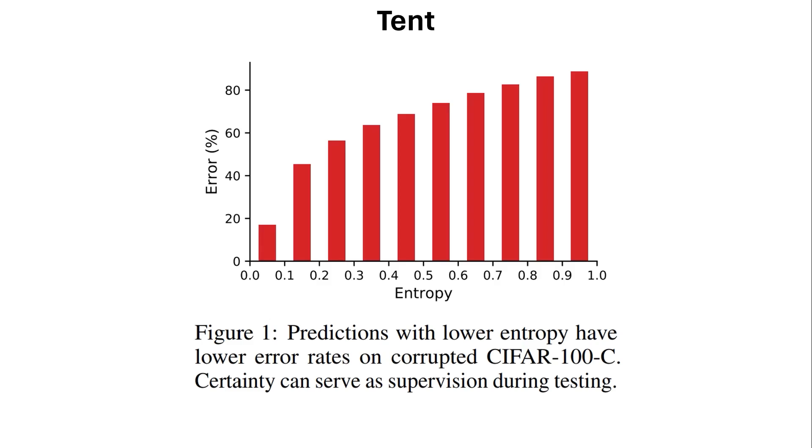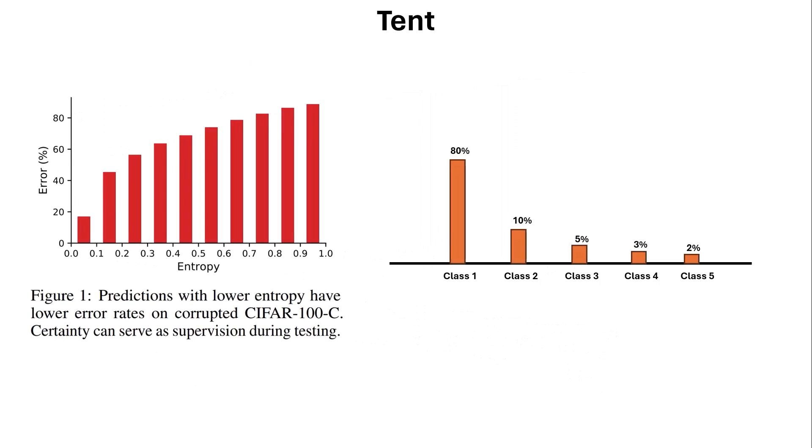From Tint, you might recall this figure that shows there is a correlation between entropy and error rate, and low entropy results in low error rate. What that means is, let's assume we have five classes, and our model is 80% sure that the given input has a label of class one.